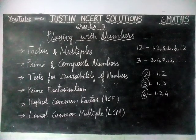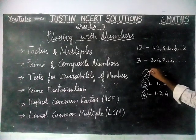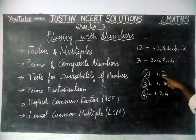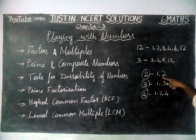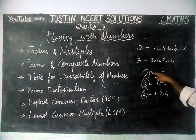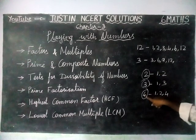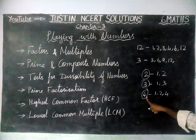Now listen — if it is a prime number, it has only 1 and itself as factors. In other words, we can say a prime number has only 2 factors. And a composite number has more than 2 factors.